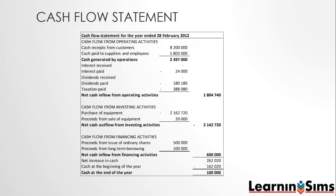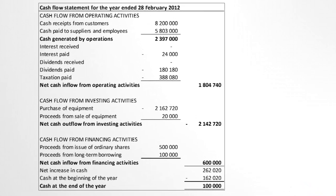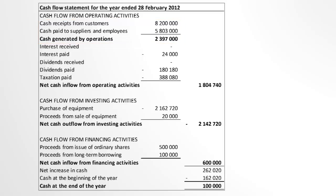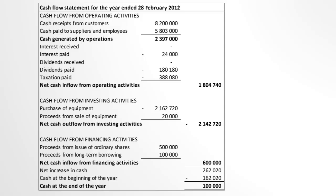Finally, we have the cash flow statement. There are two methods of creating this statement. This simpler method shows us cash generated by operations as all the cash we received from customers, less all the cash we paid to suppliers and employees. We then add interest received and deduct the interest we paid. Next, we add any dividends we received and deduct any that we paid out. Finally, we deduct the tax that we paid. This gives us the net cash flows from operating activities. If the amount is negative, it's a cash outflow; if the amount is positive, it's a cash inflow.